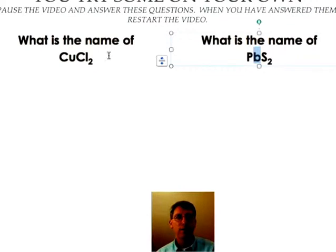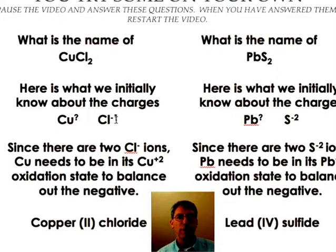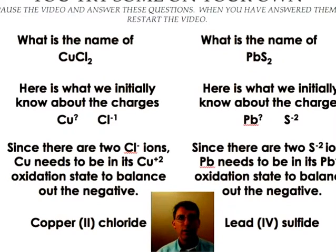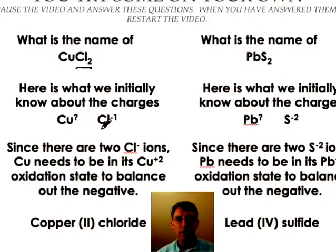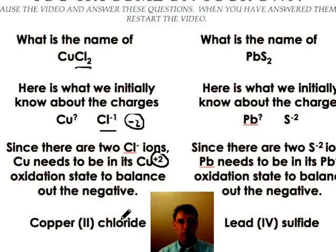Okay now that you've had a try at these let's give it a shot. Here's what we initially know about the copper with the chlorine. Copper we don't know its charge but chlorine we know since it's a halogen will take a negative one. And since there are two chlorines there we know that the two chlorines are going to give us a total charge of negative two. And so we're going to need a positive two charge in order to balance that. So it's going to be copper two chloride.